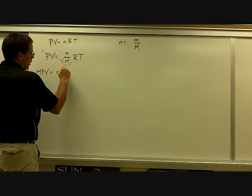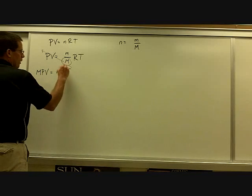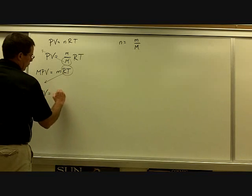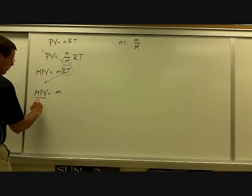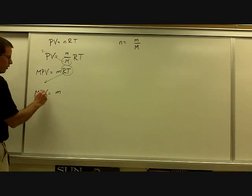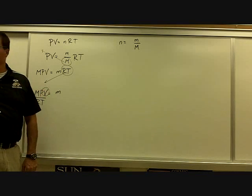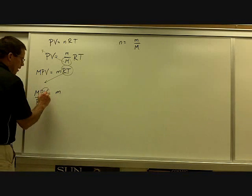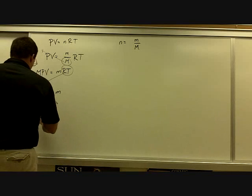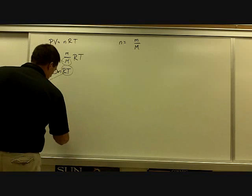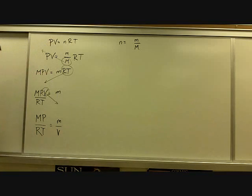We have big M times PV equals little m times RT. Then we'll get RT on the other side. So now MPV equals little m, with RT over here. We have MP over RT is equal to little m over V. So there's our density equation.